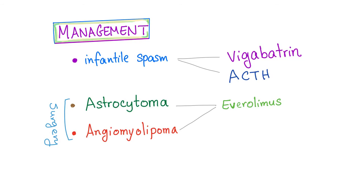There is no cure for tuberous sclerosis — we only manage symptoms. For infantile spasms, there is a drug called vigabatrin, and ACTH can also be used. For astrocytomas and angiomyelolipomas, a newer drug called everolimus — similar to sirolimus — is available. Surgery can also be performed for both of these conditions.